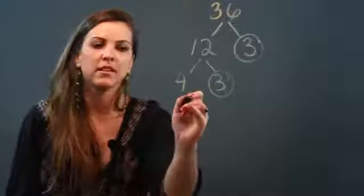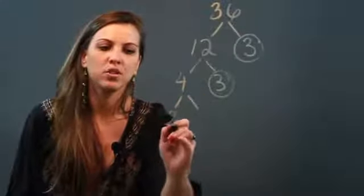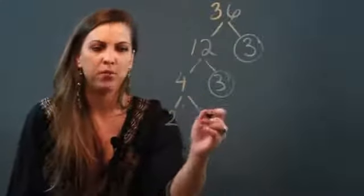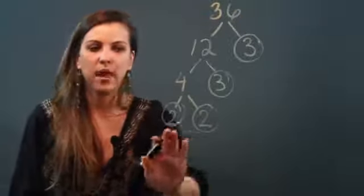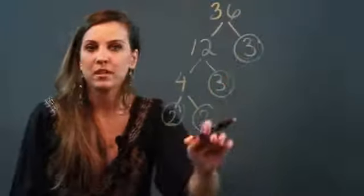Two numbers that I know that go into 4 are 2 and 2. These are both primes, so I'm going to circle that, circle that. I'm done breaking it down. Every branch of my tree has been circled.